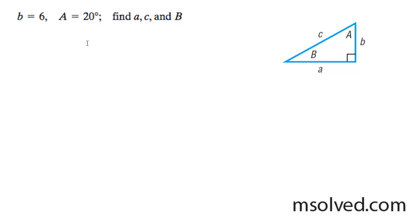Let's find the triangle. We need to find side A, side C, and angle B. I know that A is equal to 20 degrees. That means B is going to be 70 because of 180 degrees, 180 minus 90 minus 20. And I know that B is equal to 6.